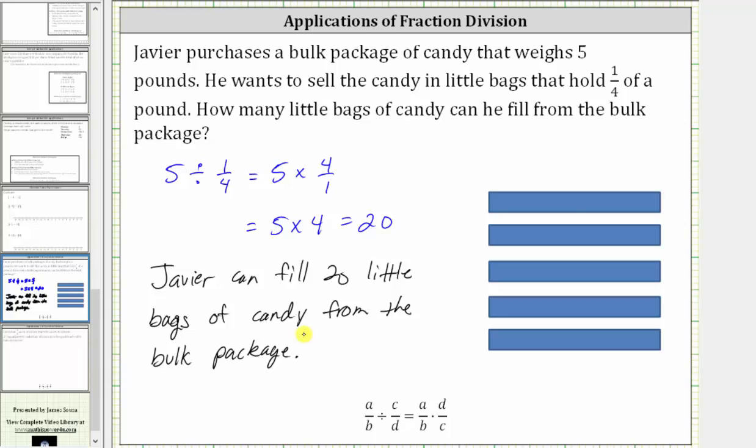Before we go, let's model this solution. If we let each bar represent one pound of candy, the five bars represent the five pounds of candy. And now to determine how many one-fourth pounds are in five pounds, we would cut or partition each bar into four equally sized pieces.